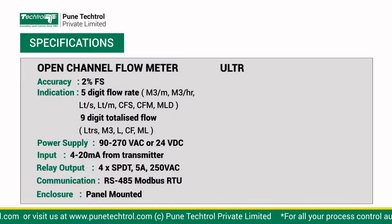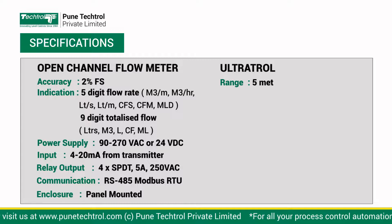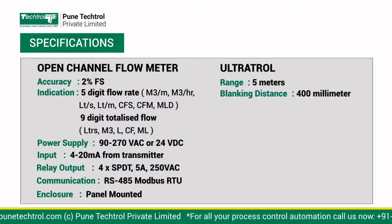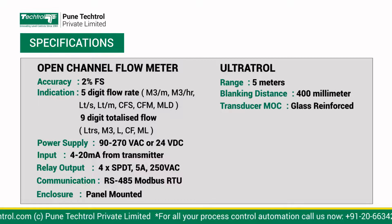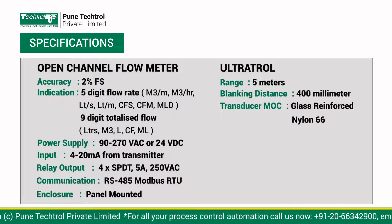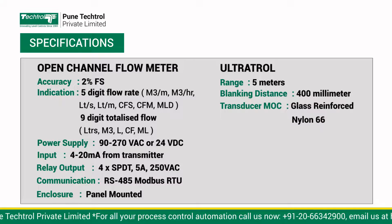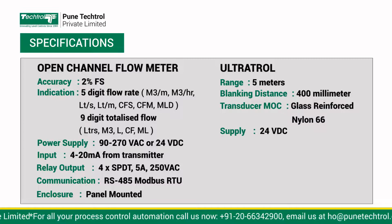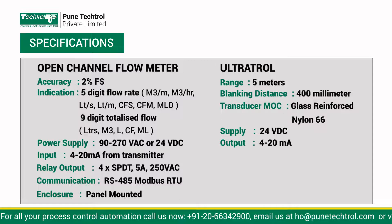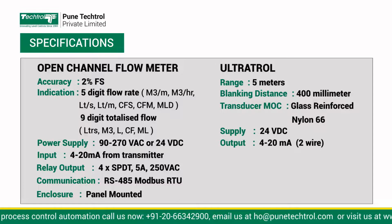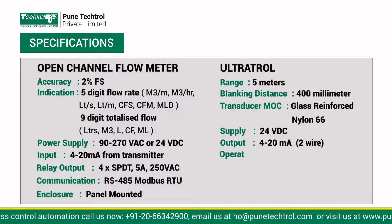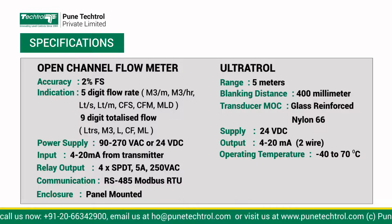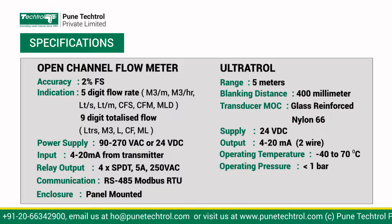Ultratrol specifications: Range 5m, blanking distance 400mm, transducer MOC glass-reinforced nylon 66, supply 24V DC, output 4-20mA two-wire, operating temperature minus 40 to 70 degrees Celsius, operating pressure less than 1 bar.